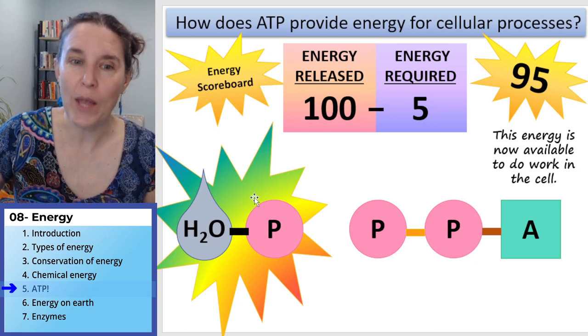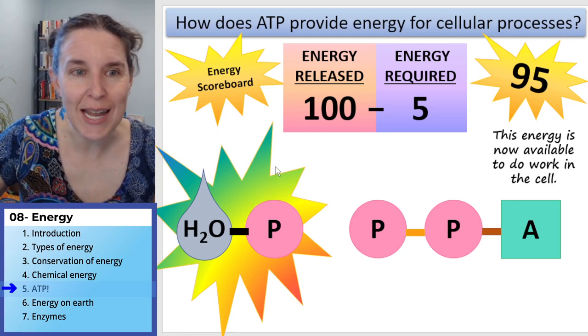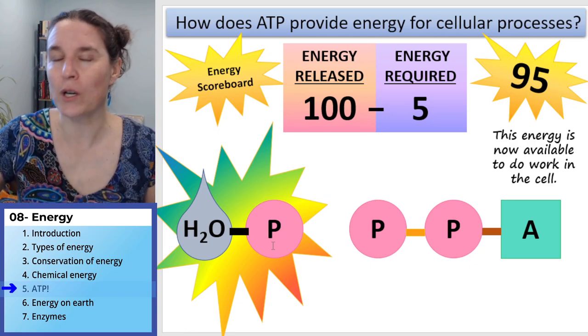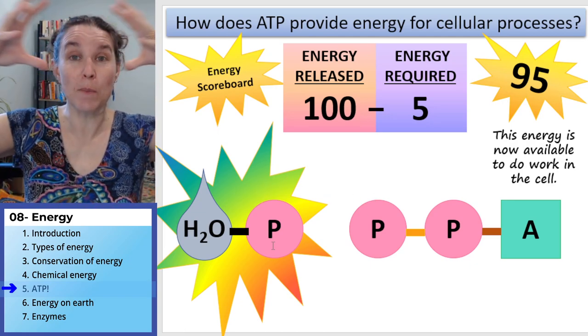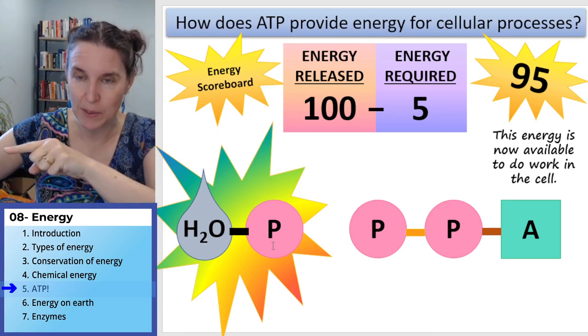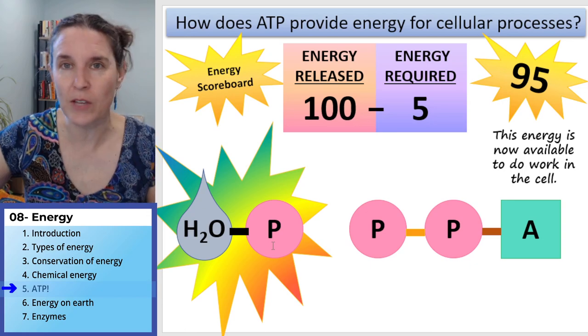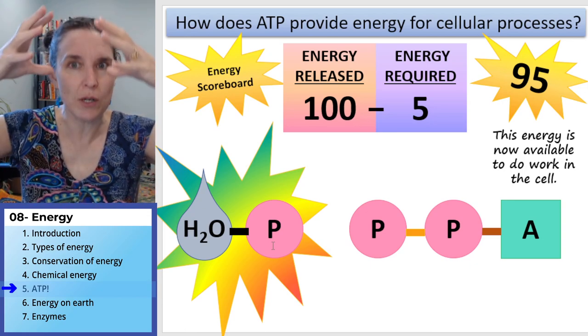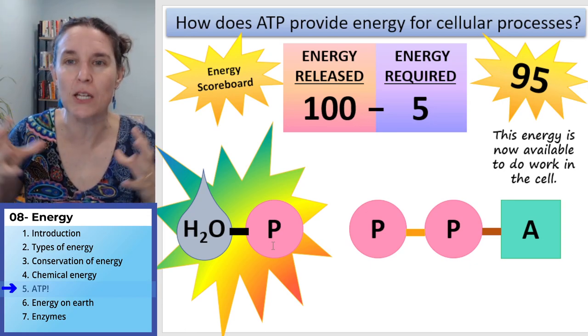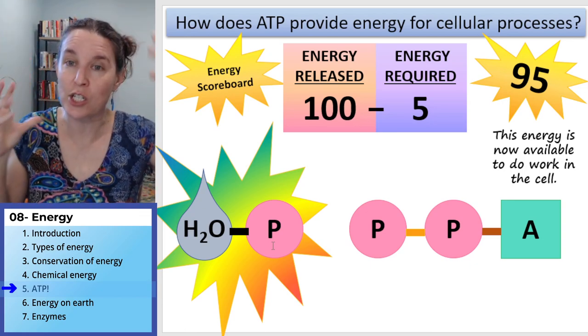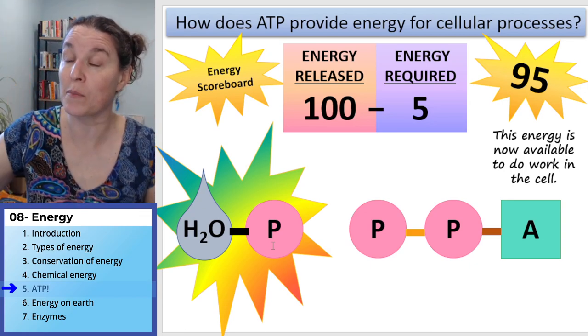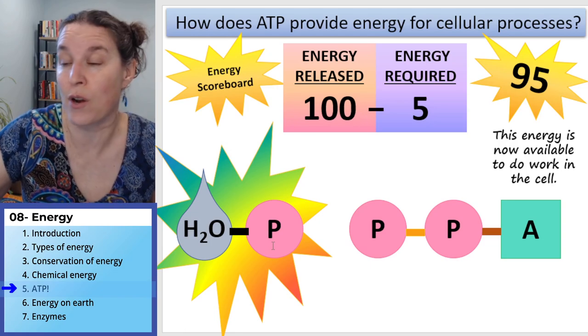Next up, we're going to look at the big picture. ATP is one example of chemical energy. Now we're going to look at the big picture of energy transfers on Earth.